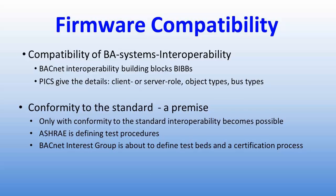Interoperability is the ability of diverse systems and organizations to work together. BACnet accomplishes interoperability through the use of BIBs, which are BACnet Interoperability Building Blocks. The intent of BIBs is to provide a way for a specifier to write a performance specification without the need to understand all of the technical details on how it should be implemented. In essence, a BIB is a simple definition of an interoperability function.